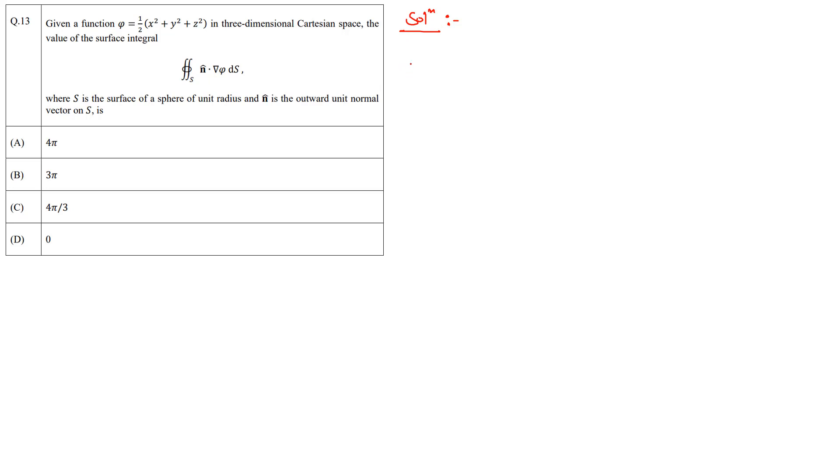So we have been given a scalar function φ which is half x square plus y square plus z square.